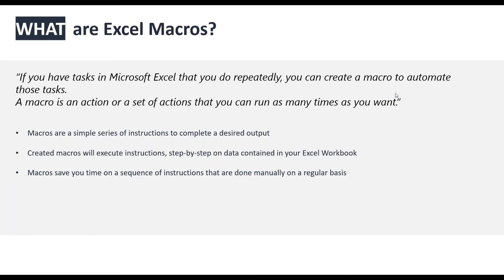If you've used VisibleThread Docs, you'll be familiar with outputs such as the compliance matrix or Excel sheets from the concept tab or discovery tab. Macros are a simple series of instructions you run to complete a particular desired output. They execute instructions step by step and can use data contained in your workbook. The idea is that they save you time on tasks you would normally do manually.